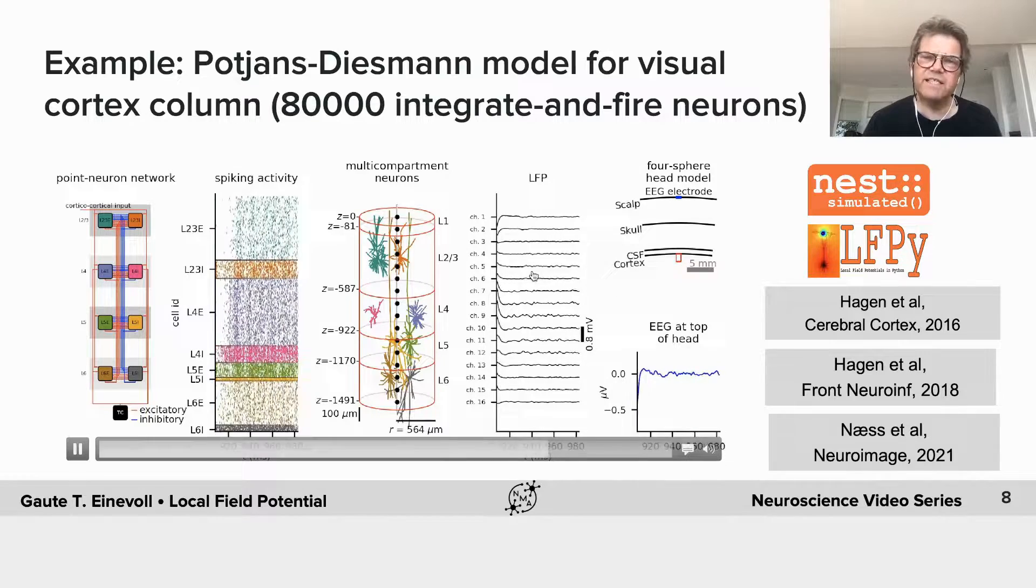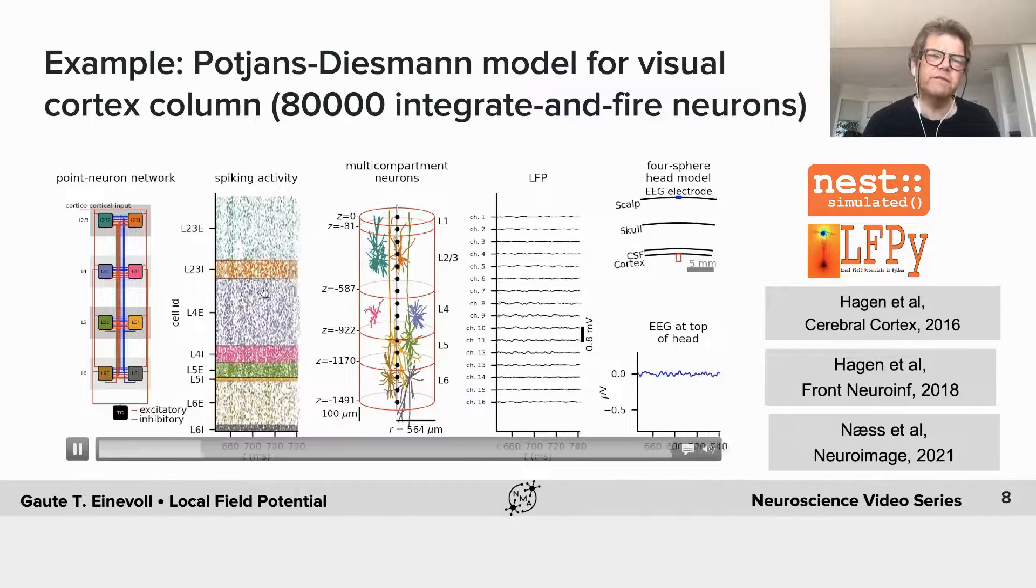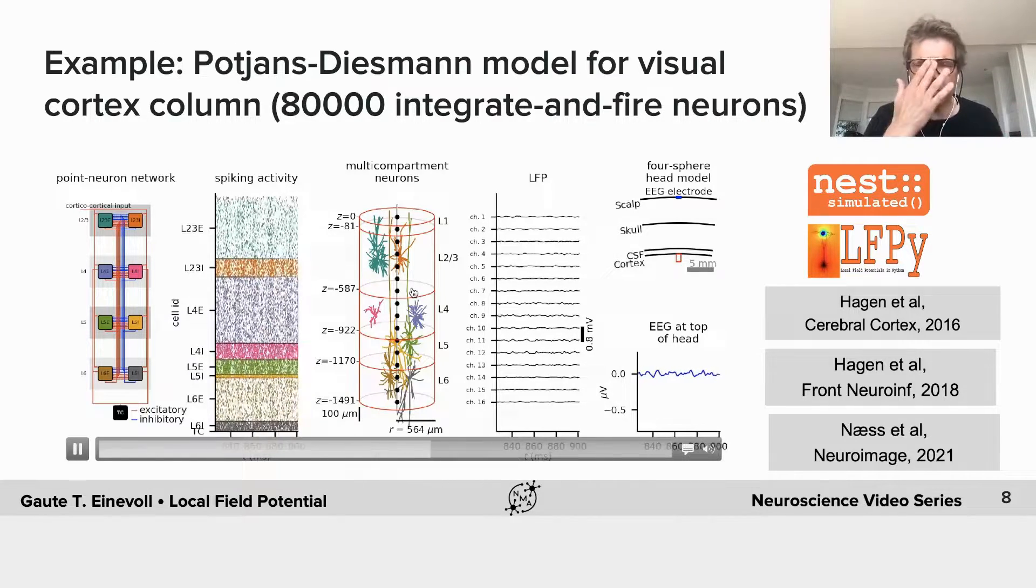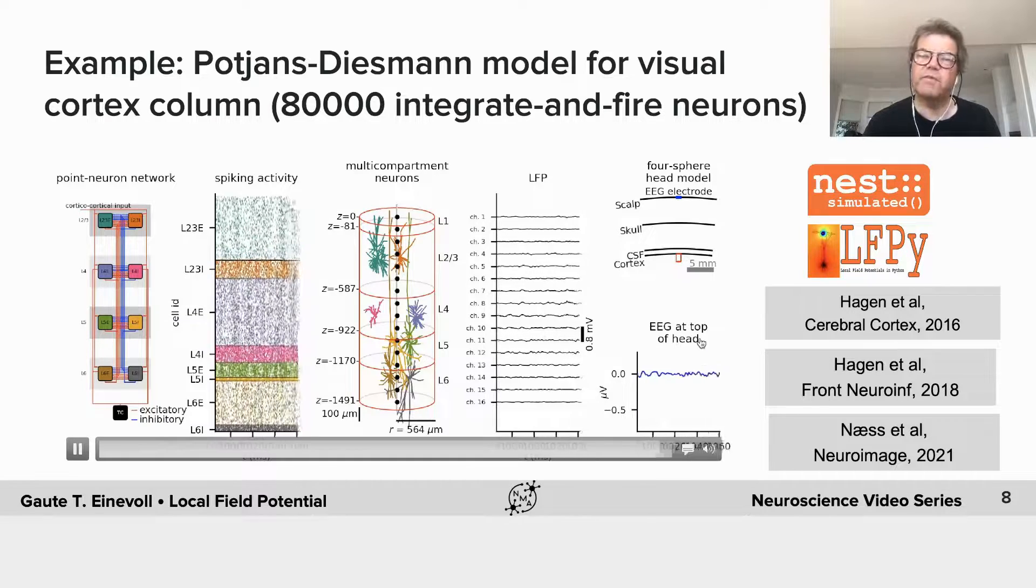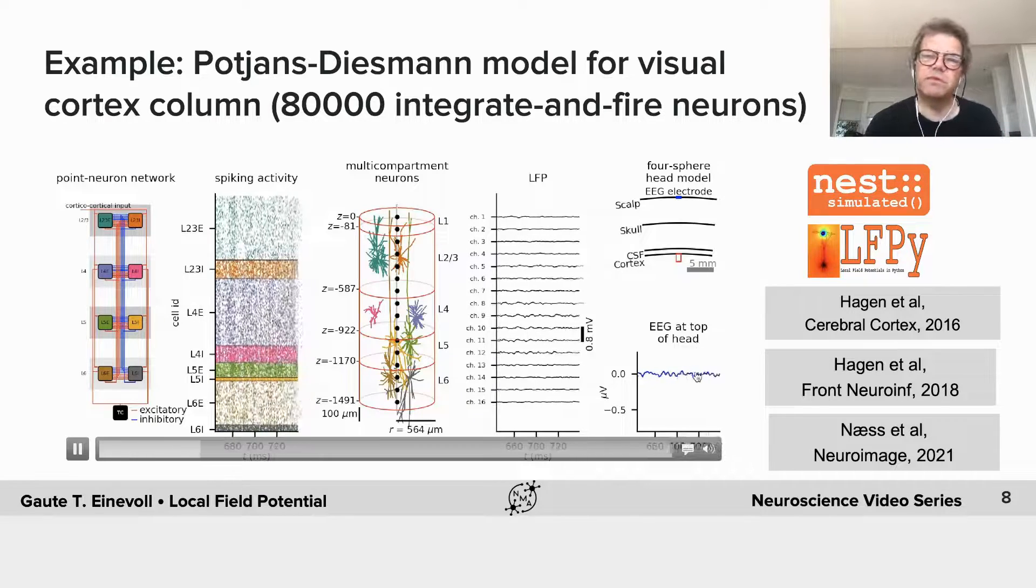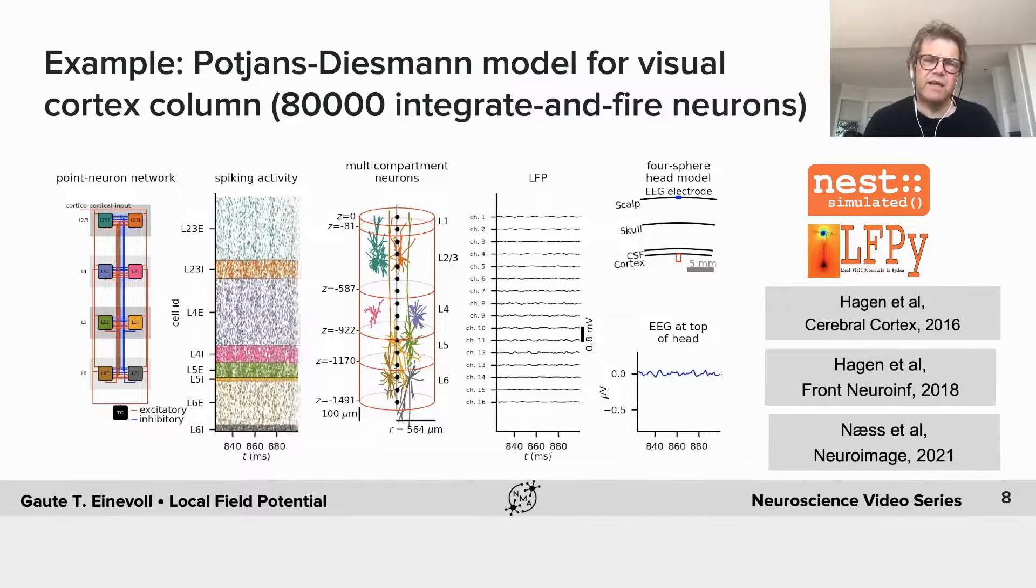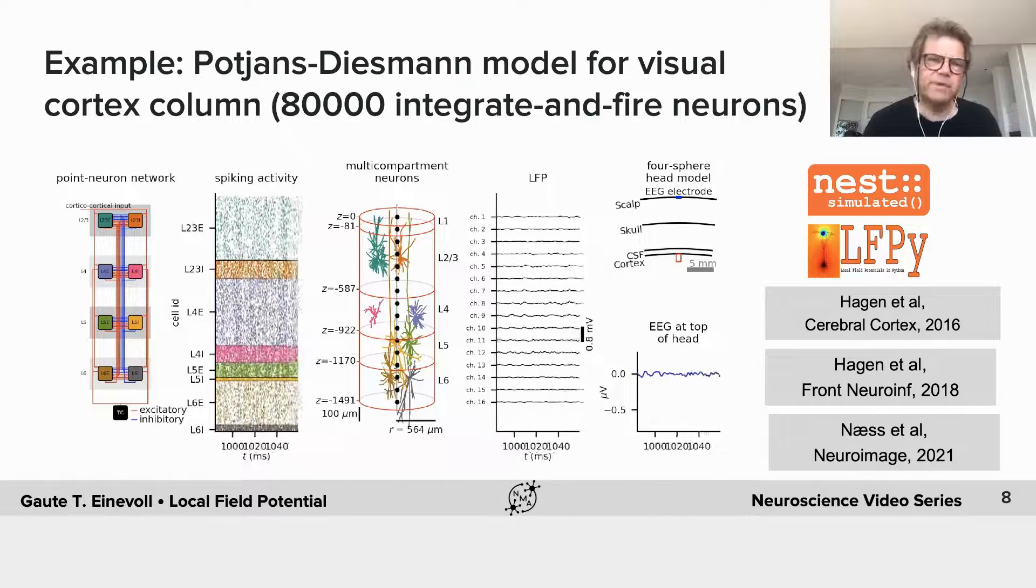So it's like a two-step thing. You get the point neurons to get the spikes, and then store the spikes, and they redo in some sense the simulation to compute LFP. And now also in this image here, this video here, also the EEG.